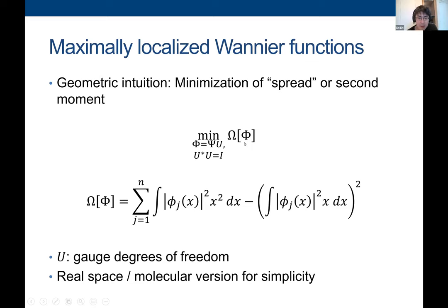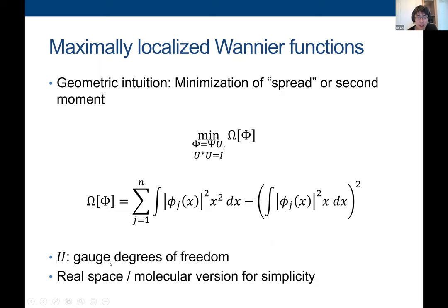The geometric intuition is that if you want to localize, you minimize a second moment. If you have N orbitals, you sum the square of the position operator minus its center over all of them—this minimizes the total spread, which is exactly what localization requires. Here, U is the gauge degree of freedom; it doesn't change anything physical such as the density matrix.